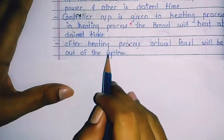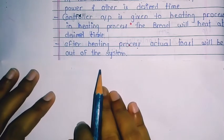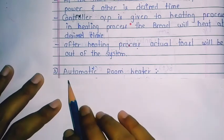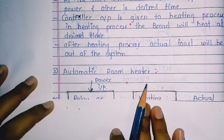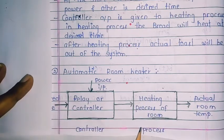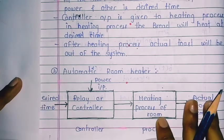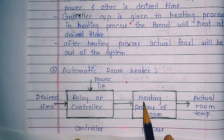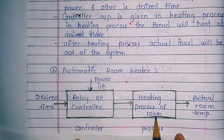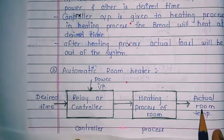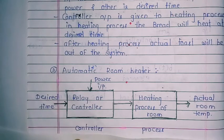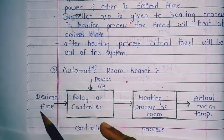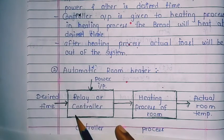The second example is the automatic room heater. Again, a block diagram is shown. It is the same as the automatic toaster system — the only difference is that the heating process is now the heating process of the room.